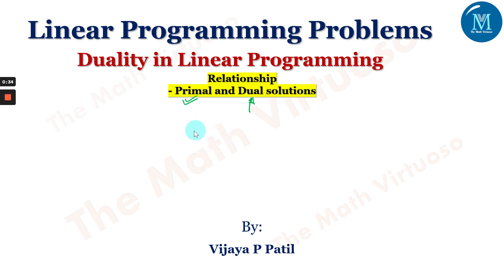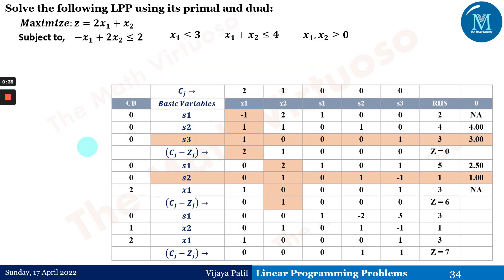The question is: solve the following LPP using its primal and dual. Maximize z equals 2x1 plus x2, subject to three constraints. The question is given in maximization type and all constraints are less-than-or-equal-to type.